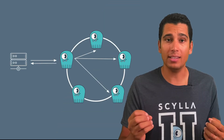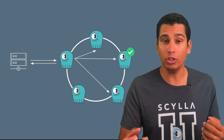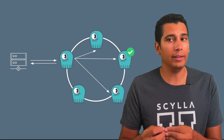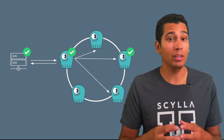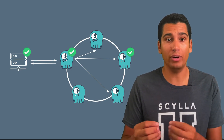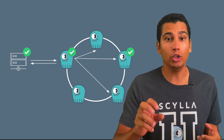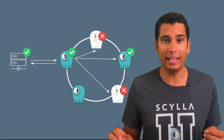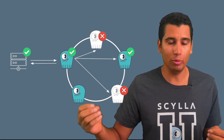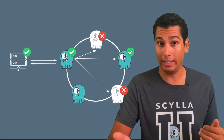Let's say that you have a consistency level of ANY. In this case, any of the nodes can insert and acknowledge the insertion of the data, and at that moment you're going to send a response back to your server. This is great because you're going to have very low latency, but the drawback is that you're not sure your data is fully replicated — if some nodes are down, that data won't be replicated and you might not find it.